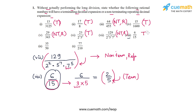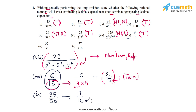Part 9 is 35/50. Reducing it to lowest form gives 7/10, and 10 = 2 × 5 has only 2s and 5s in it. So the decimal expansion of 35/50 will be terminating.